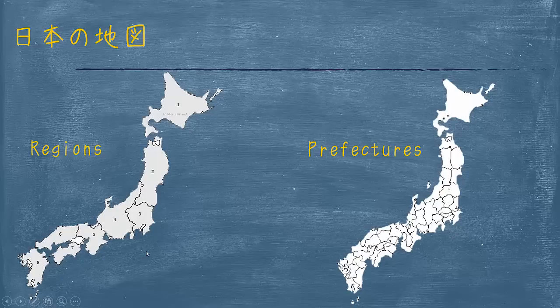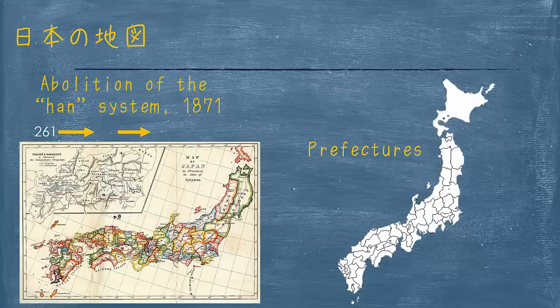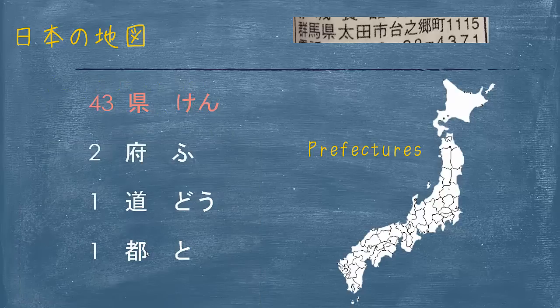The region is never actually written in the address, whereas the prefecture is. The prefectures have gone through a lot of different ways of naming, but basically the abolition of the Han system in 1871 when Japan was rapidly modernizing meant that the number of prefectures decreased from 261 down to around 72, down to what we have today. There are 43 general prefectures called Ken — it's a suffix — so this one here is called Gunma-ken. Gunma is located right in the middle.